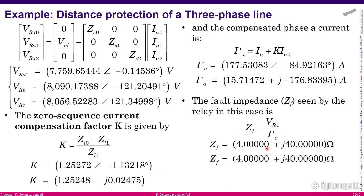To summarize: with this numerical example, I have demonstrated that by using the proper equations and relationships between voltages and currents for each fault type — three-phase, line-to-line, and phase-to-ground — we can make the distance relay measure the positive sequence impedance of the transmission line in all cases. This is very important because we use the positive sequence impedance to define the settings of the distance relay.